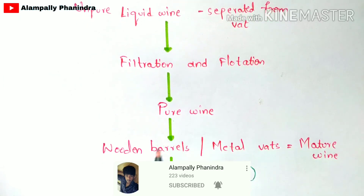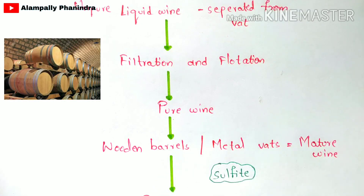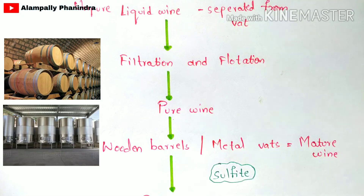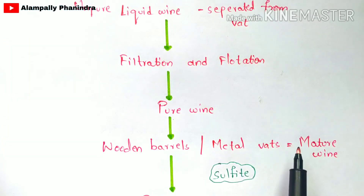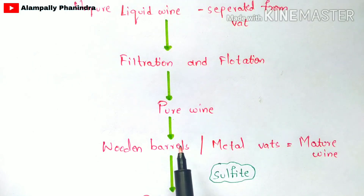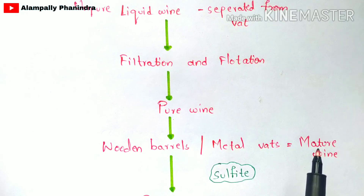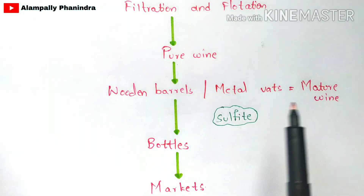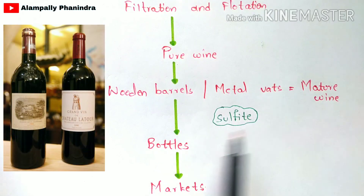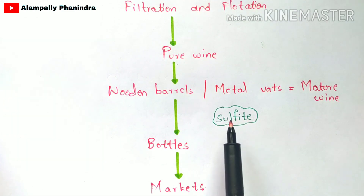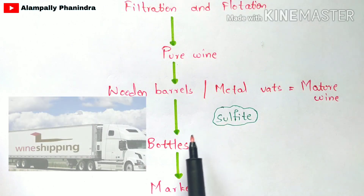The pure wine obtained is stored in wooden barrels or metal vats for four to five days, during which it matures and develops its flavor — producing mature wine. This mature wine is then bottled, and a small amount of sulfite is added before bottling. The sulfite acts as a preservative to preserve the wine, which is then supplied to the markets for consumption.